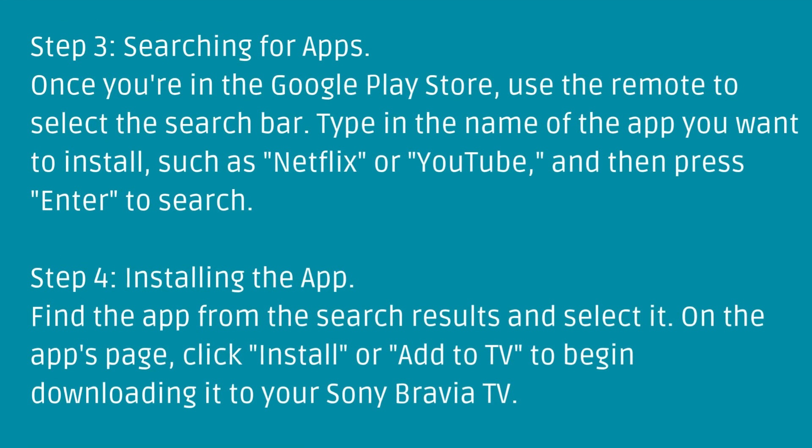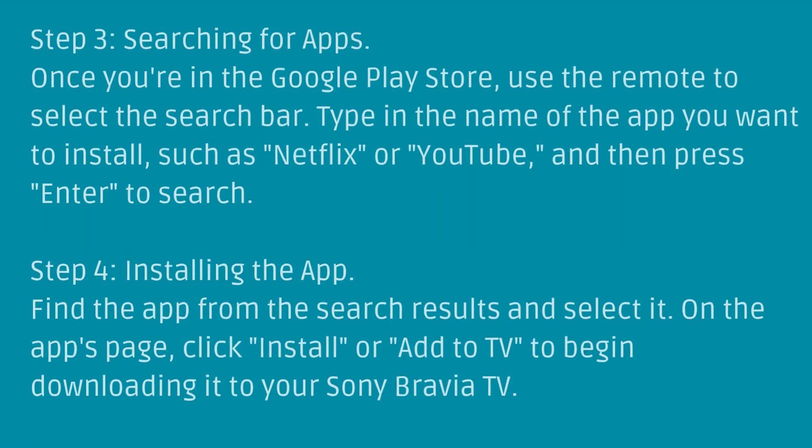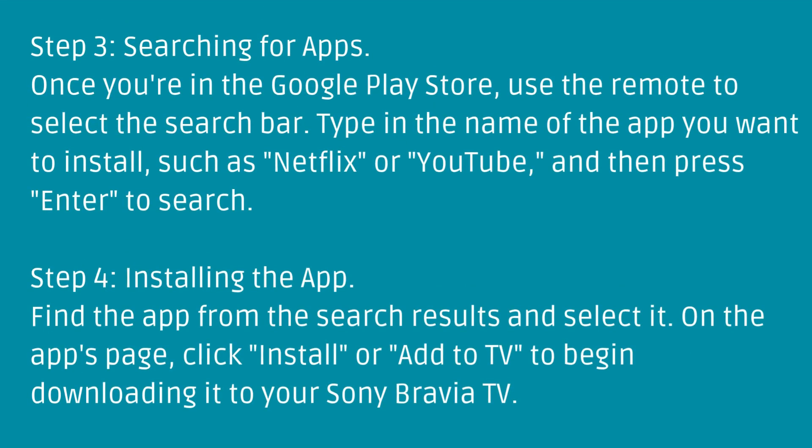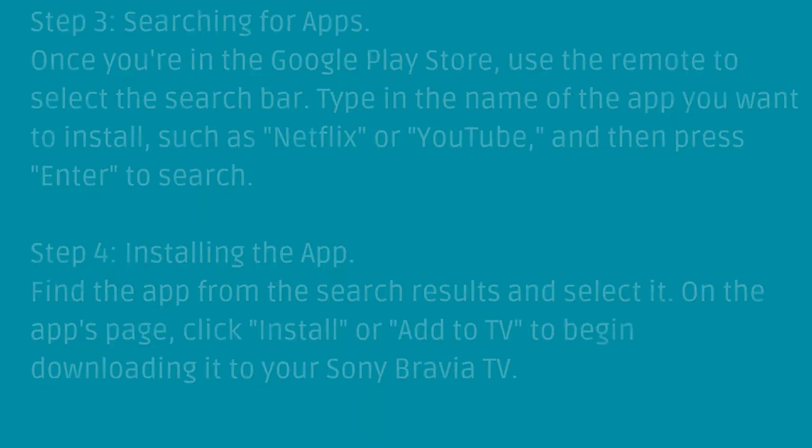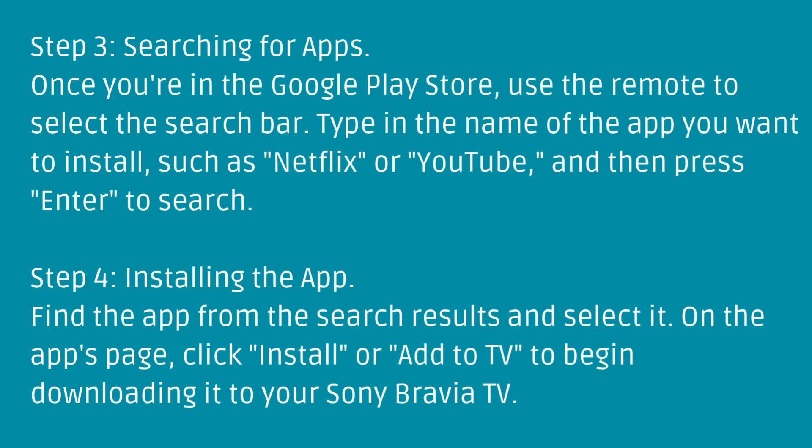Type in the name of the app you want to install, such as Netflix or YouTube, and press Enter to search. Step 4: Installing the app. Find the app from the search results and select it. On the app's page, click Install or Add to TV.